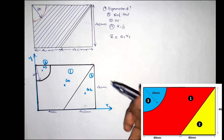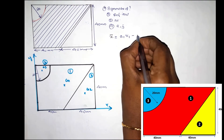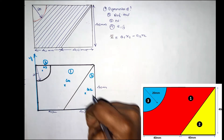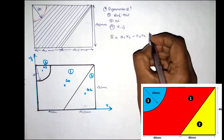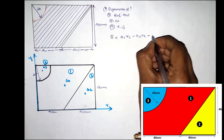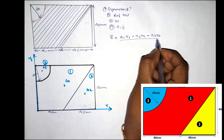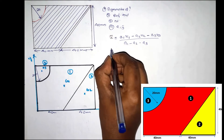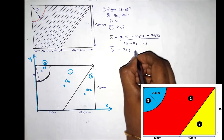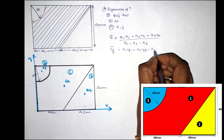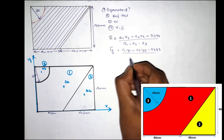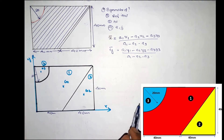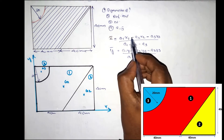The quarter circle is subtracted, so we use minus signs. The formula is: x-bar equals (A1·X1 minus A2·X2 minus A3·X3) divided by (A1 minus A2 minus A3). Similarly, y-bar equals (A1·Y1 minus A2·Y2 minus A3·Y3) divided by (A1 minus A2 minus A3).